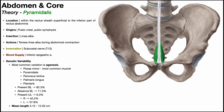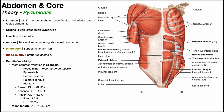The pyramidalis originates off of the pubic crest, and the aponeurotic tissue coming off the muscle blends with the pubic symphysis. As it travels vertically, the muscle moves medially and blends into the linea alba. The linea alba is essentially the midline of the rectus sheath — a toughened part of the rectus sheath that runs up the midline of the abdomen all the way to the xiphoid process.